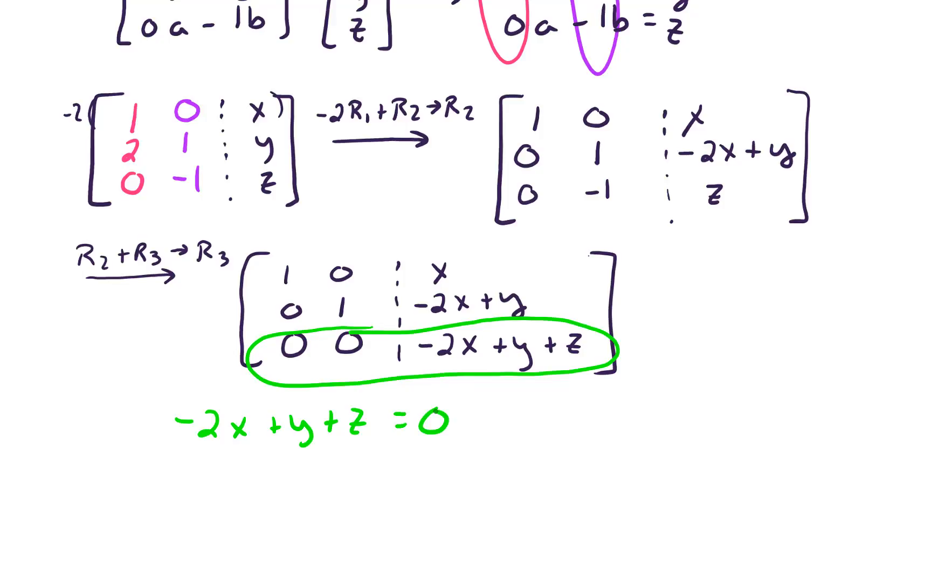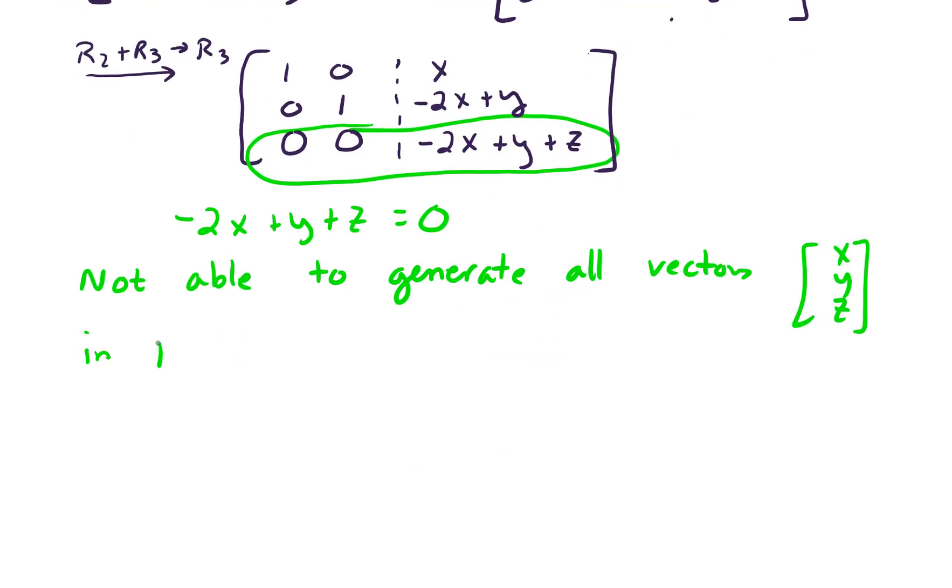Okay, so we're not able to generate all vectors x, y, z in R3. We are only able to get some of them, to get certain vectors.